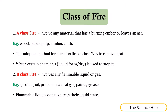Class A fire involves any material that has burning embers or leaves ash — for example, wood, paper, pulp, lumber, and cloth. The adopted method to extinguish a Class A fire is to remove heat. Water, certain chemicals, liquid foam, and dry agents are used to stop it.